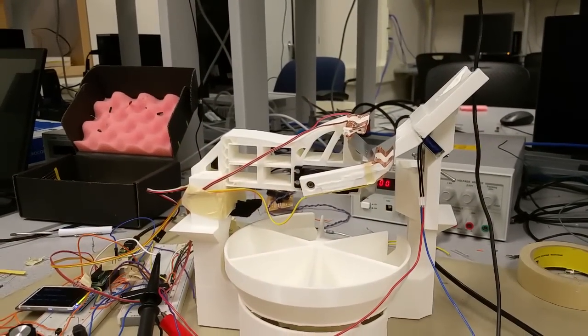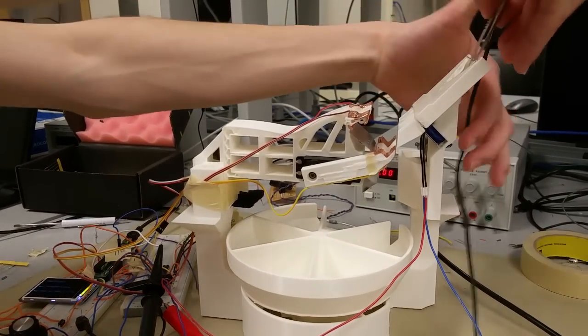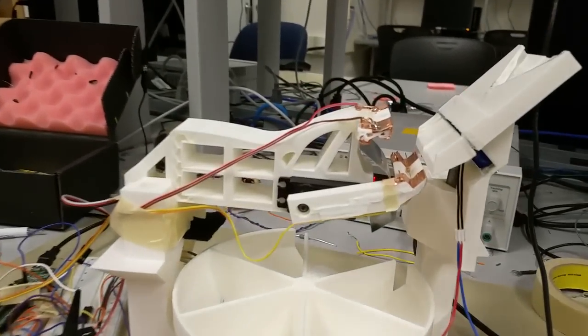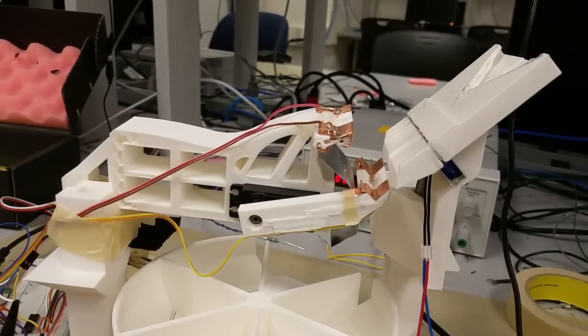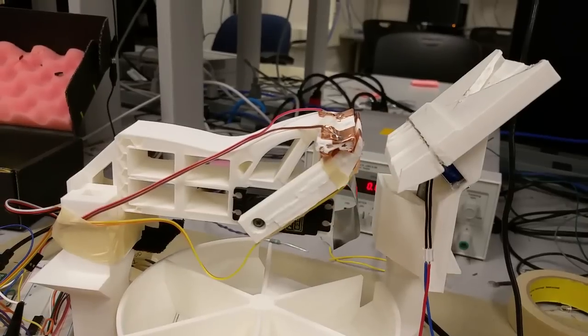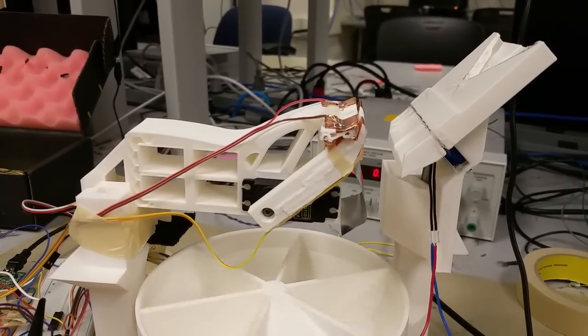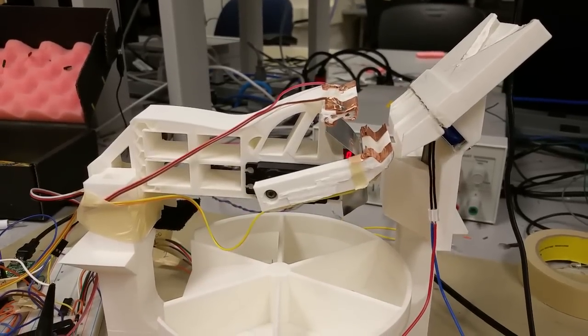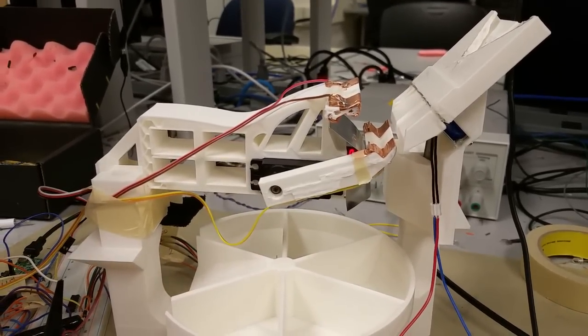We have a resistor sorter here - feed a resistor into the hopper up there. Now it's in the jaws, it's going to be measured, and the sorter is changing position.